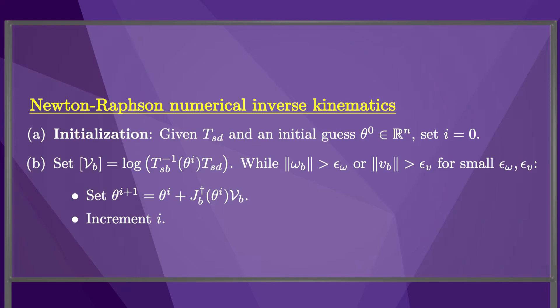Otherwise, we update our joint vector guess by adding the pseudo-inverse of the body Jacobian times the body twist VB, and repeat.